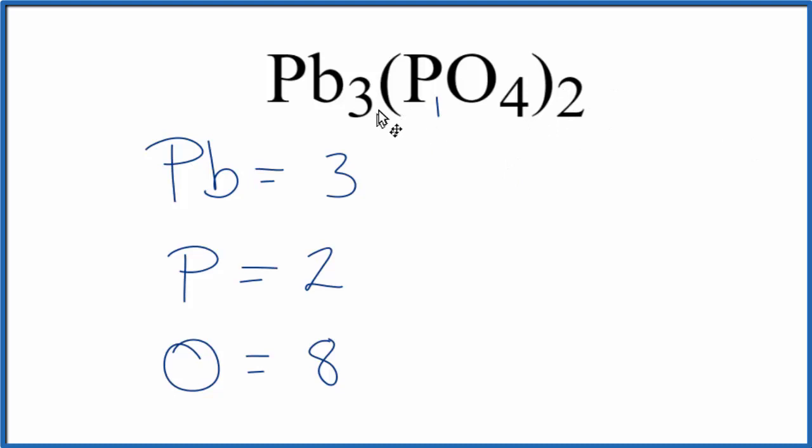Sometimes you're asked to figure out the number of atoms, for example phosphorus atoms, in 1 mole of this Pb3(PO4)2. When you're asked to do that, just multiply the number of atoms times Avogadro's number. 2 times Avogadro's number gives you the number of phosphorus atoms in 1 mole of lead phosphate.